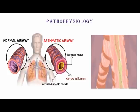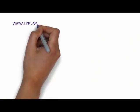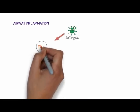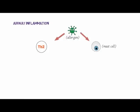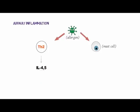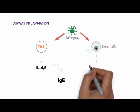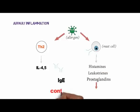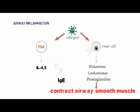Which cells are primarily involved in allergic airway inflammation? When an allergen enters the body, it initiates a cascade of reactions causing activation of Th2 cells and mast cells. Th2 cells release cytokines like IL-4 and IL-5, which cause IgE production. These IgE antibodies attach to mast cells causing degranulation and release of mediators including histamine, leukotrienes, and prostaglandins, which directly contract airway smooth muscle causing bronchoconstriction.